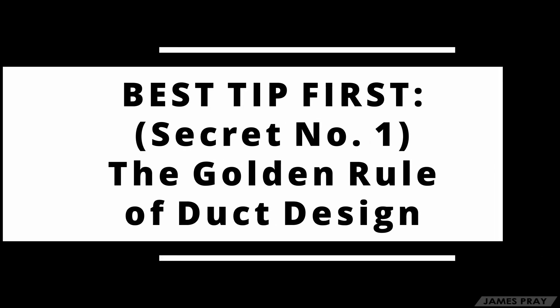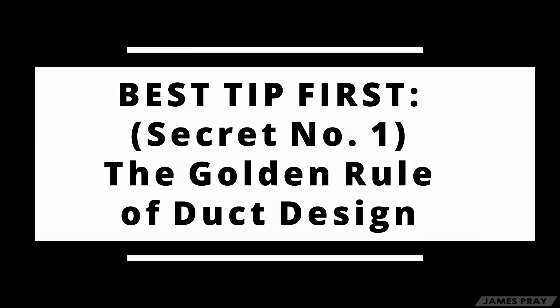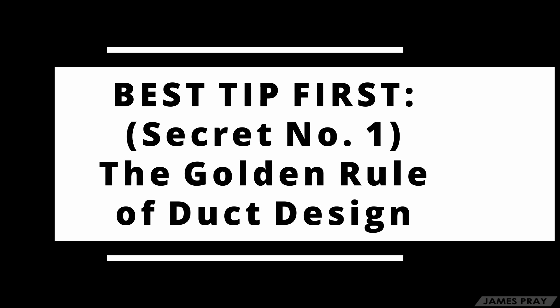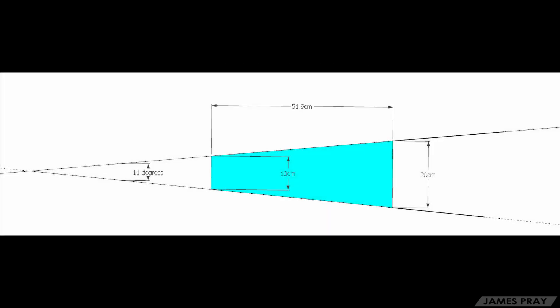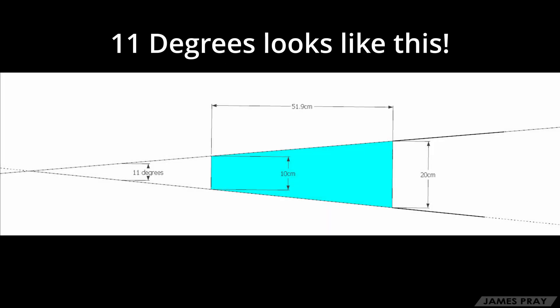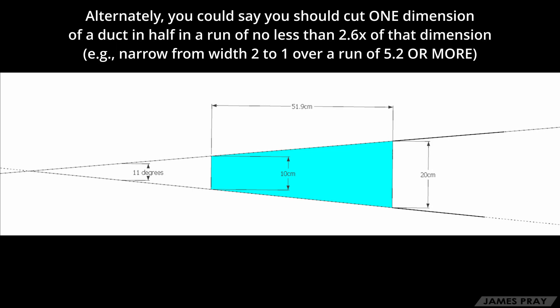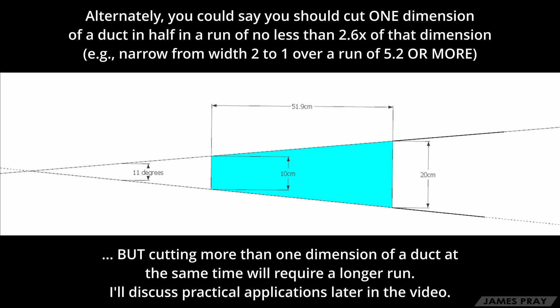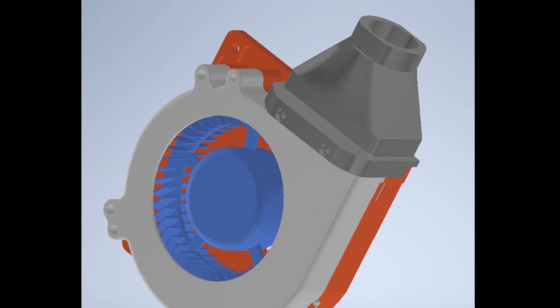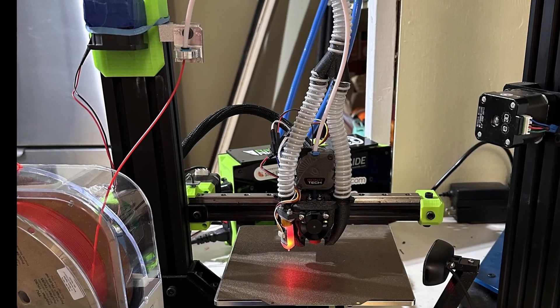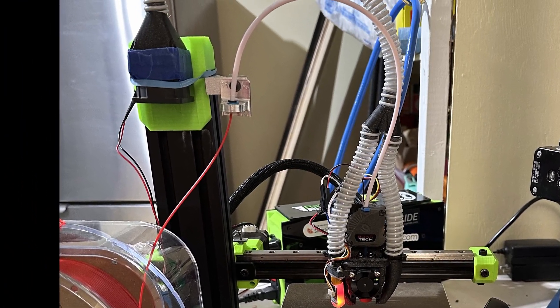I'm nice, so I'll share my best tip first. If you get nothing else out of this video, get this: the golden rule of duct design is to narrow your ducts gradually. This is actually an HVAC rule of thumb, but it seems to work even at small scales. Don't narrow a duct by more than 11 degrees measured wall versus opposite wall. Any sharper than that and it starts to throttle airflow. This is why people stick 45-degree cone reductions on fans to adapt them for CPAP hose and then complain it doesn't work.